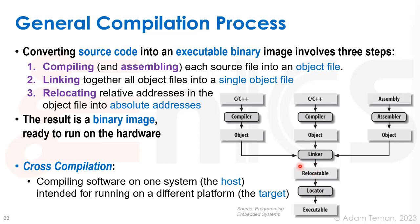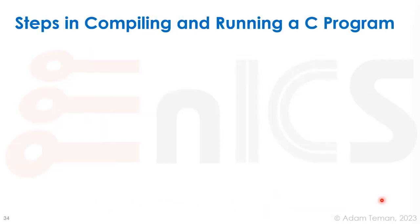I want to mention one more term called cross compilation. Often we compile code on one system, such as Windows, Mac OS, or Linux, and we want to run that code on a different platform, such as an embedded system running ARM or RISC-V. We call that cross compilation, when we compile software on one system (the host) intended for running on a different platform (the target).